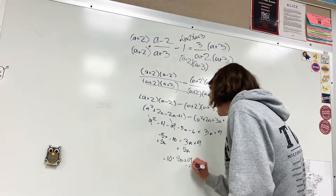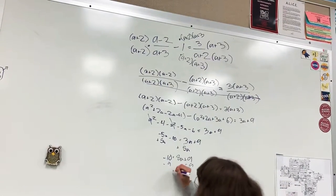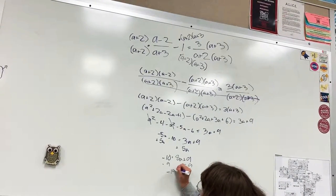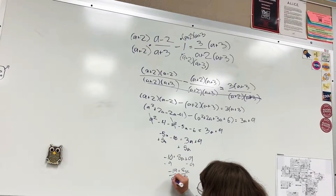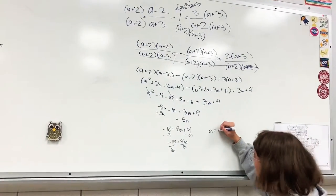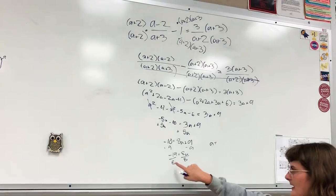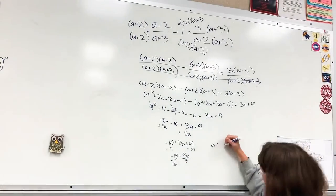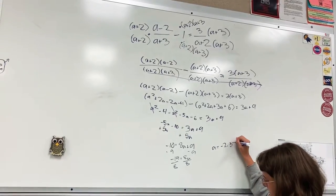And then you subtract 9 from over here. And then you get -19 = 8a. Divide the 8 off. And then you end up with a equals, as a decimal, you can either put -19/8 or you can put the decimal equivalent, which is 2.375.